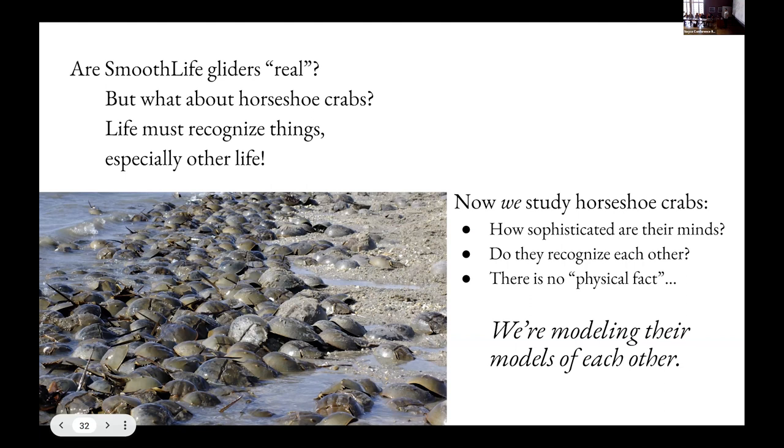And now we study the horseshoe crabs and we ask questions like how sophisticated are their minds? Do they recognize each other, for instance? And I don't think that this has actually a physical answer, right? There's not, this is not an answer that is like, does the speed of light constant or something. Really, it's a model that we are making of the horseshoe crabs. In other words, there's a theory of mind question here about horseshoe crabs. And there's a second order theory of mind question about how we are modeling the minds of the horseshoe crabs. And it's sort of horseshoe crabs all the way down, if you like. So there's a subjectivity about this question that I think we need to face.